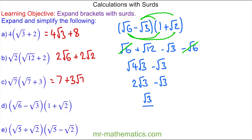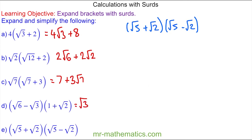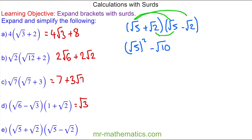Do you want to try and expand and simplify question E? You can pause the video and resume it when you're ready. For question E we're going to multiply root 5 by root 5, which gives root 5 squared. Then positive root 2 multiplied by negative root 2 makes a negative root 2 squared.